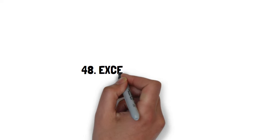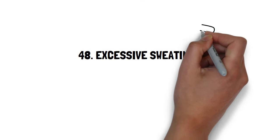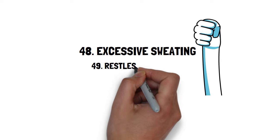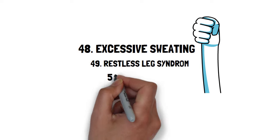Forty-eight, excessive sweating. My palms would be so wet all the time I basically had to carry a crunched tissue in my hand all the time. Forty-nine, restless leg syndrome. Fifty, limb weakness.